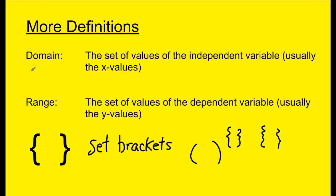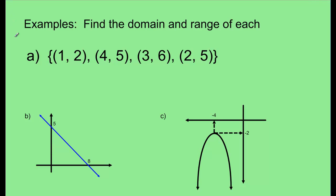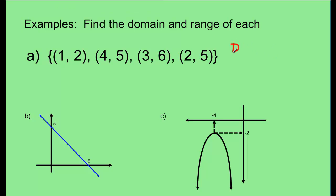So remember: domain is just whatever possible x values exist, and range is just whatever possible y values exist. Here's the first example — we have a set of four ordered pairs: (1,2), (4,5), (3,6), and (2,5). Let's start with domain. Remember, domain is just the set or list of any possible x values that exist.